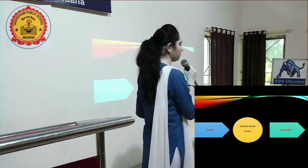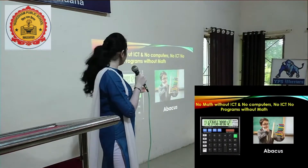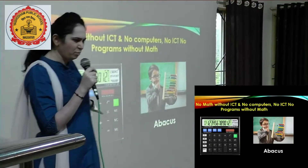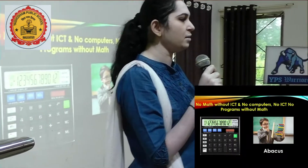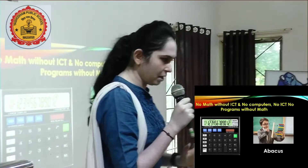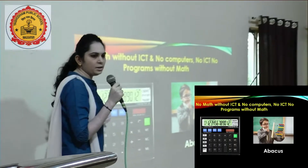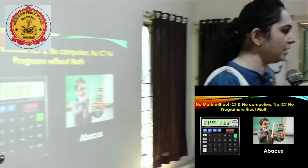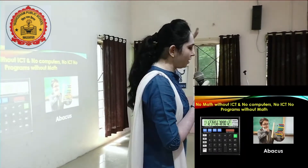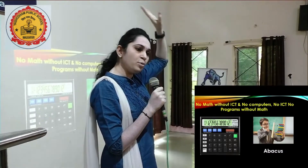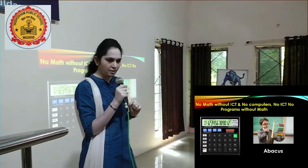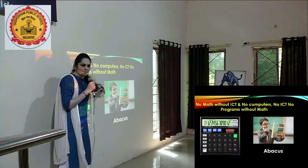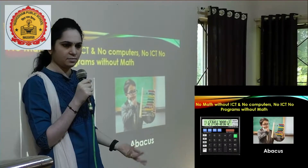Here you can see two images: this is an abacus, which you might have learned about in your childhood, and this is the calculator. Nowadays we use smartphones for calculations. The abacus was the first calculating device, designed around 300 to 500 BC — before Christ. Imagine the logical thinking those people had! This abacus was the first calculating device and the calculator is the modern calculating device, but both perform calculations — so how are they related?